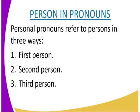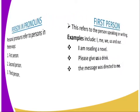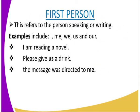Now let's look at person in pronouns. We have three types: the first person, the second person, and the third person. The first person is the person speaking or writing. In this case, I am the first person. The pronouns used with the first person include: I, me, we, us, and our. 'I' and 'me' are in singular form.